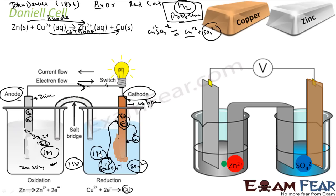We need something to neutralize the charge, and for this we need a salt bridge. The salt bridge is an inverted U-shaped glass tube filled with agar-agar and KCl mixture. It is prepared by dissolving agar-agar in 100 ml of KCl solution. The agar-agar and KCl solution does not react chemically with SO4 2− ions or Zn2+ ions.